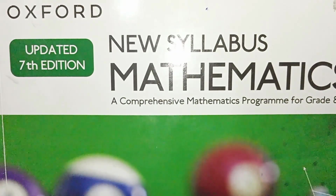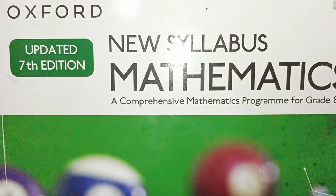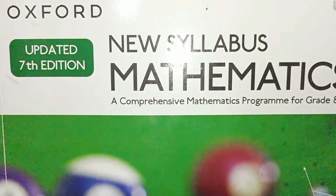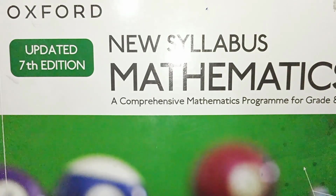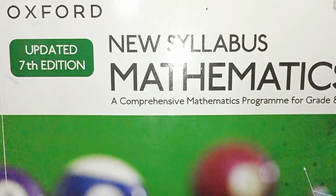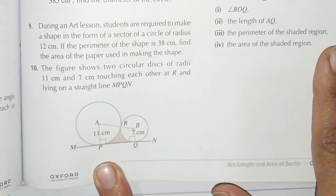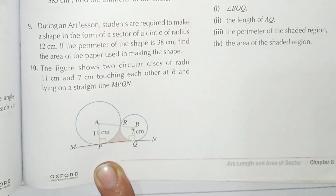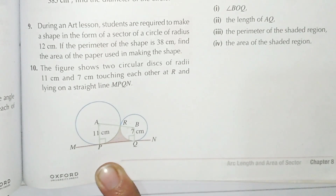This is the updated seventh edition of Book D3, and today we will do exercise A to B, question number nine and ten. Let's start. Question number nine: during an art lesson, students are required to